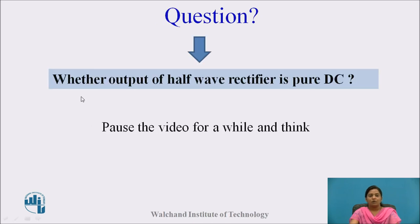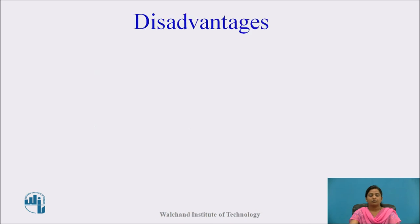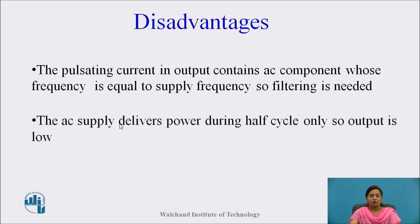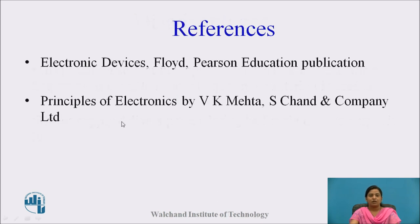Question: whether the output of half wave rectifier is pure DC? Pause the video and think. The answer relates to its disadvantages: the pulsating current in the output contains an AC component whose frequency is equal to the supply frequency, so filtering is needed. The output of a half wave rectifier is not pure DC — pulsating DC components are present. Also, the AC supply delivers power during half the cycle only, so output power is low.